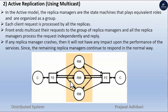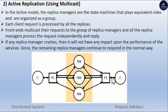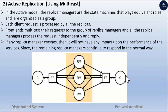This is the diagram of the active replication model. Here, all the replica managers are connected with the front end. Each replica manager gives a response to the front end, and the front end gives the response to the client. If one replica manager crashes, the other replica managers will still provide the response.